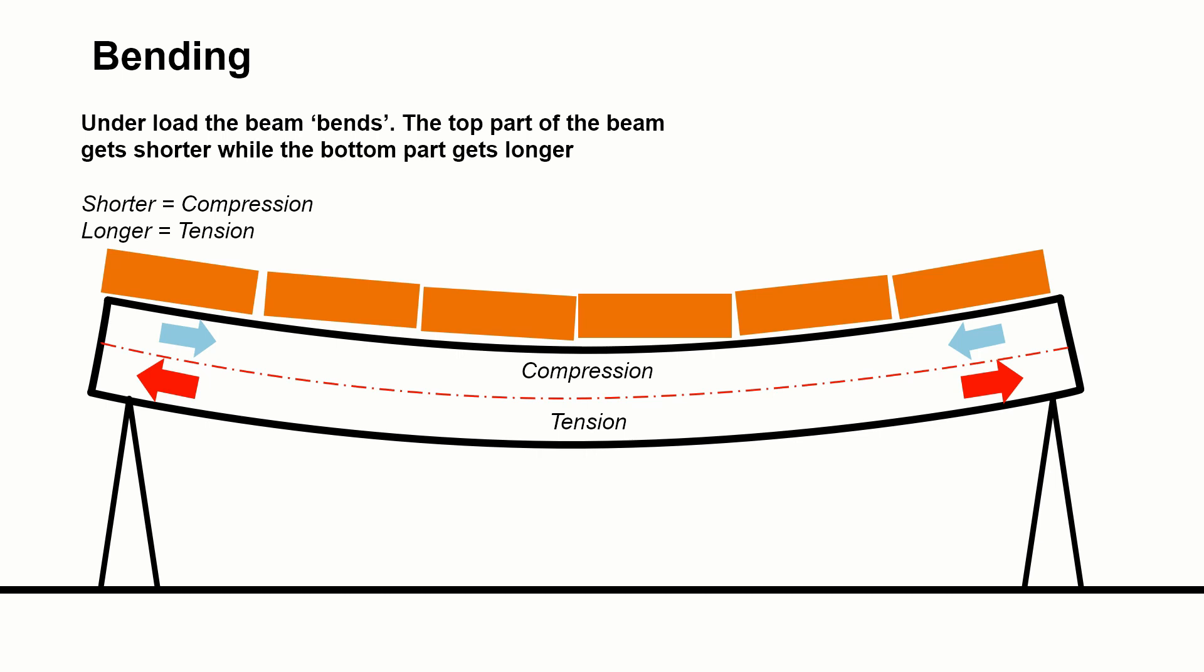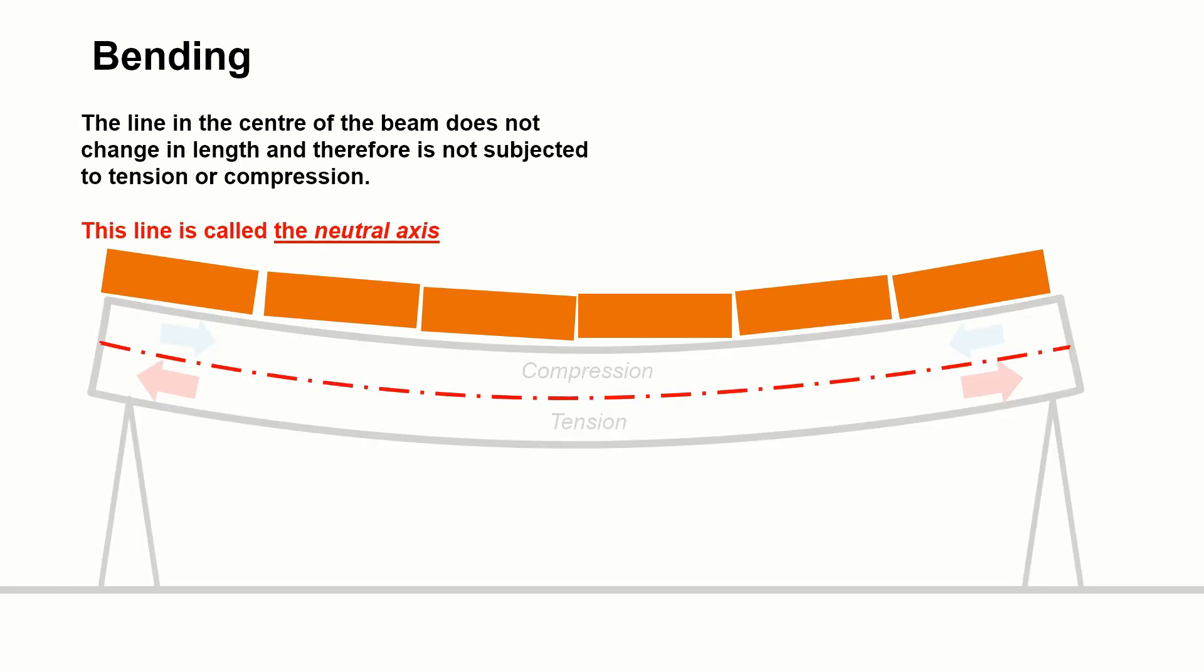The top part of the beam would effectively get shorter and the bottom part would get longer. If you think about the corner on a running track, the inside track, the bit nearest the inside of the field is a shorter distance than the outside of the track. It's no different from what happens to a beam under load. The top of the beam is getting squeezed in and it becomes slightly shorter. The bottom of the beam, because it's getting longer, gets pulled apart. Bending of a beam like this is a combination of compression and tension. There is a point in the middle of the beam which doesn't change length. We would refer to that line as the neutral axis.